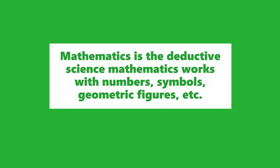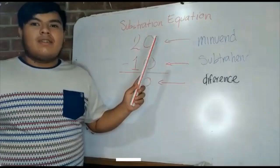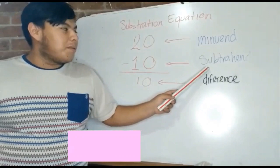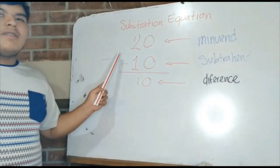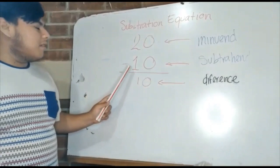Mathematics. Subtraction is the operation of subtracting. Subtraction equation means subtraction difference. When we subtract twenty minus ten, the result is ten.